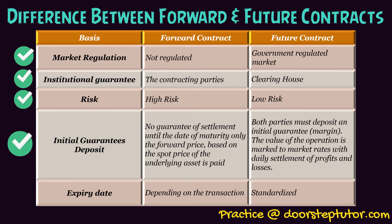Next is initial guarantee deposit: in forward contracts there is no initial guarantee of settlement and only the forward contract based on the spot price of the underlying asset is paid. In futures contracts both parties must deposit an initial guarantee margin. For example, if ABC company and XYZ company sign a futures contract, they will be required to deposit an initial guarantee in their accounts with the exchange — say Rs. 5000. Now if on the next day ABC company incurs a loss of Rs. 1000 because of a change in the price of the underlying asset, then Rs. 1000 will be deducted from ABC company's account and added to XYZ company's account. Hence the balance of ABC company's account will be 4000 and XYZ company's account will be 6000. That is why the value of the operation is marked to market rate with daily settlement of profit and losses.